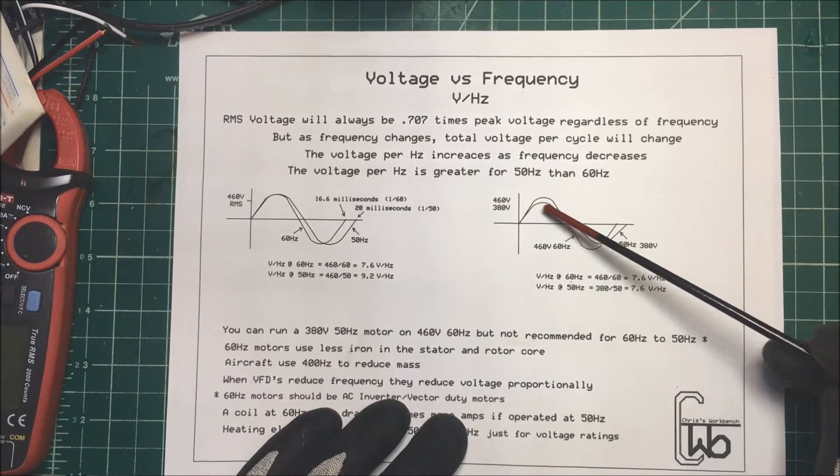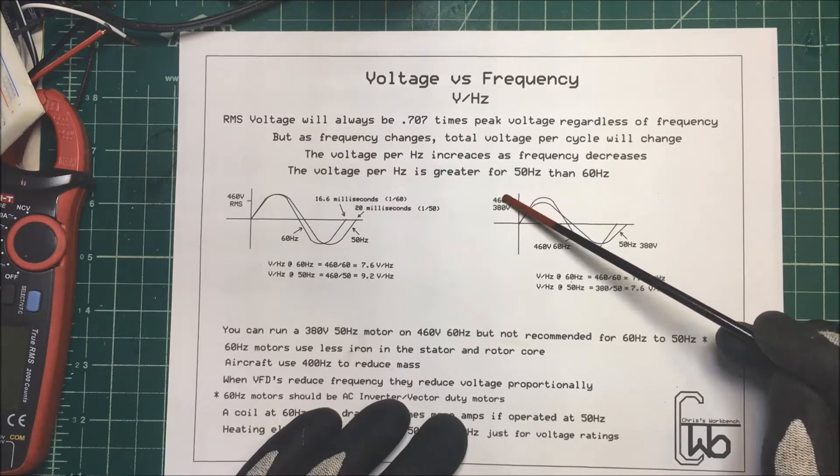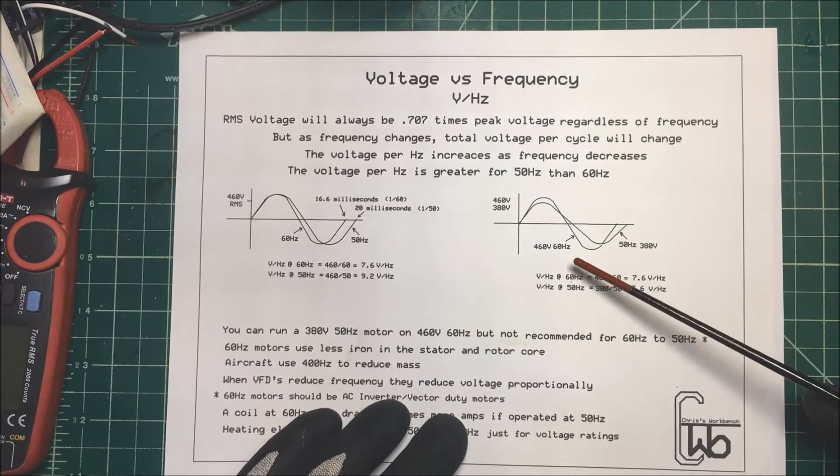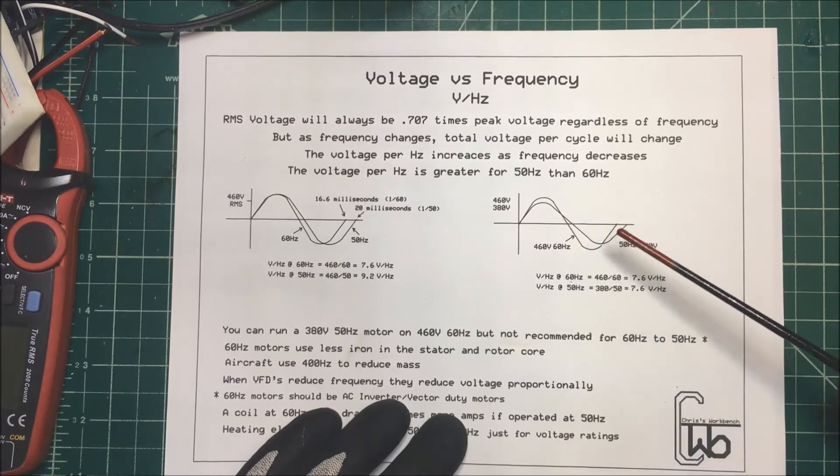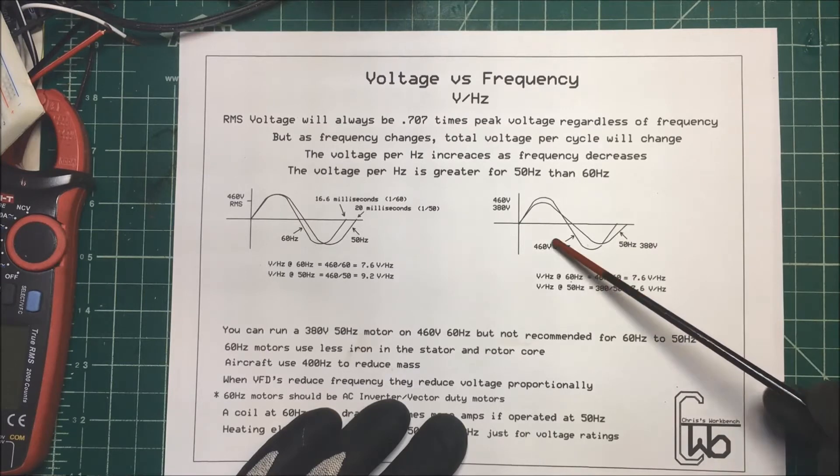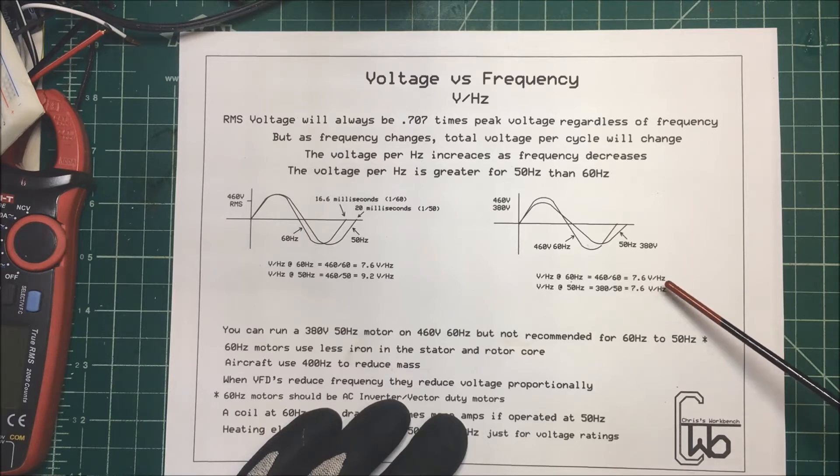Now let's take a look over here. We've got a 460 volt standard North American voltage, and then we have a 380 volt European voltage here. Now we have our two sine waves here. And if we calculate the volt hertz, of course, for 60 goes into 460, we're going to get 7.6 volt hertz.